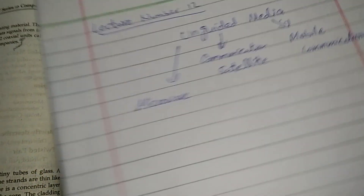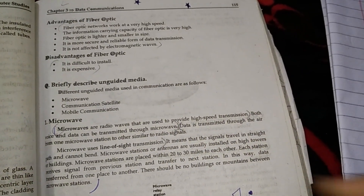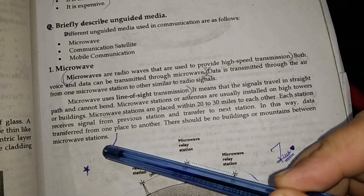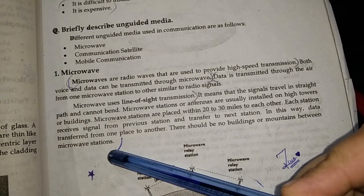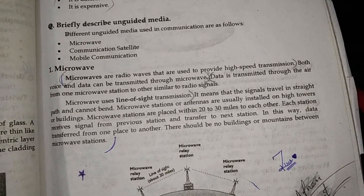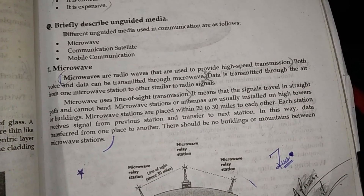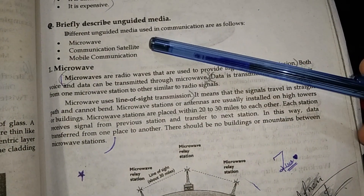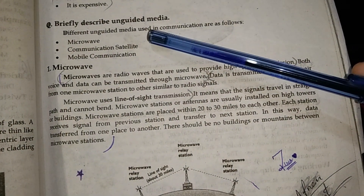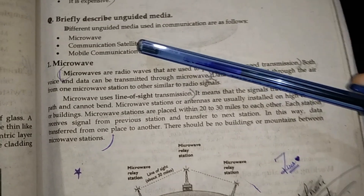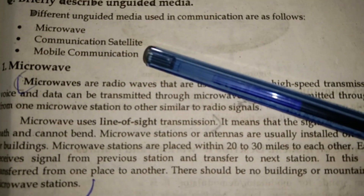Unguided media is a medium where no physical wire is involved. We communicate through waves — microwaves, radio waves, and different waves which we transfer from one place to another. Unguided media types include microwaves, communication satellites, and mobile communication.